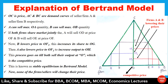Now seller B thinks that A will not change its price. So, in order to capture more market, B lowers the price to OF1. With the lowering of price, the output of seller B increases.